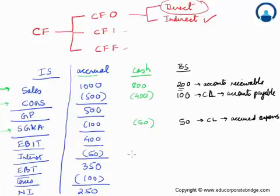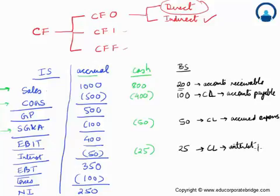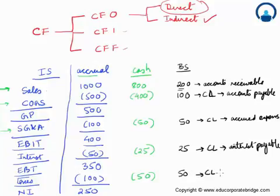For interest expense, let's assume only 25 was paid; the remaining 25 is classified as a current liability called interest payable. For taxes, let's assume 50 was paid in cash and the remaining 50, which is the unpaid amount, goes as a current liability called taxes payable.